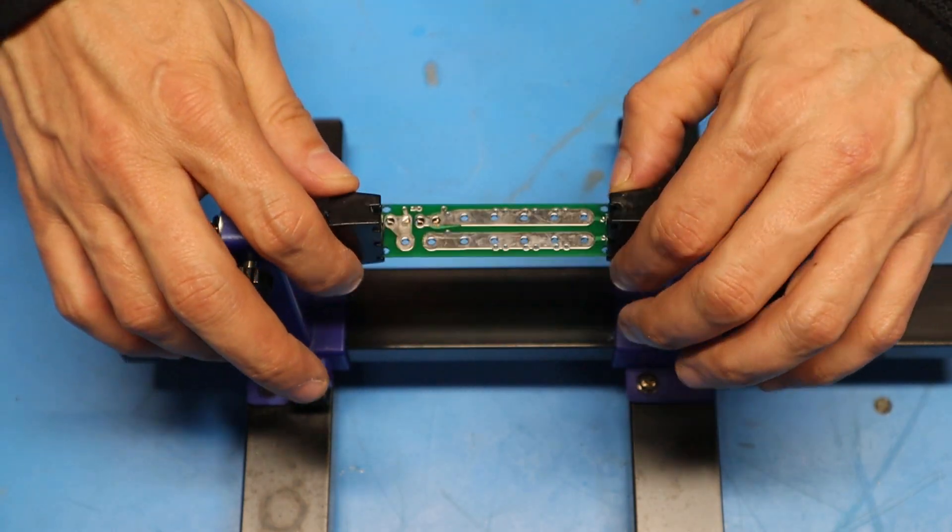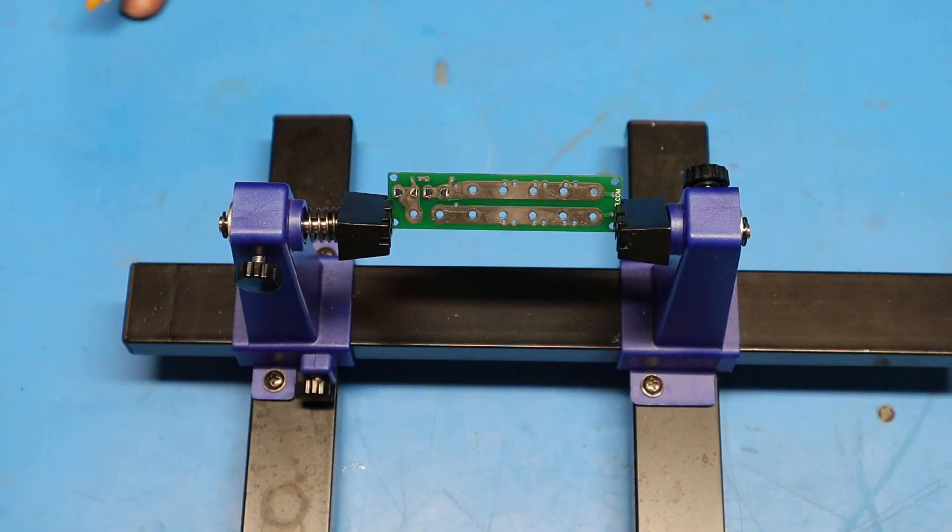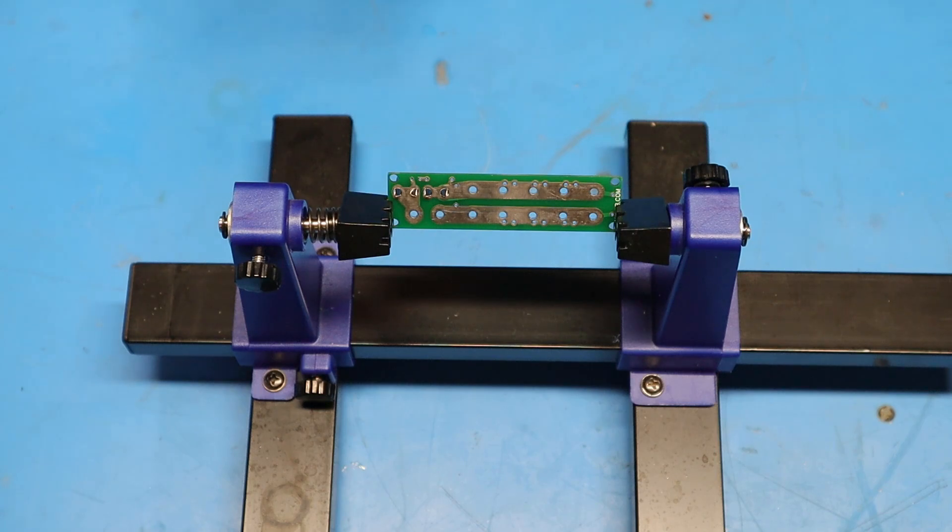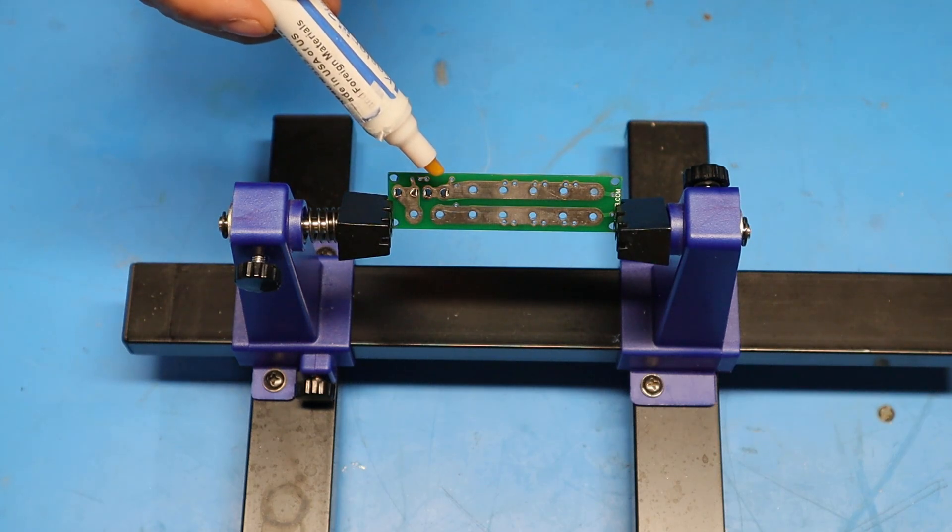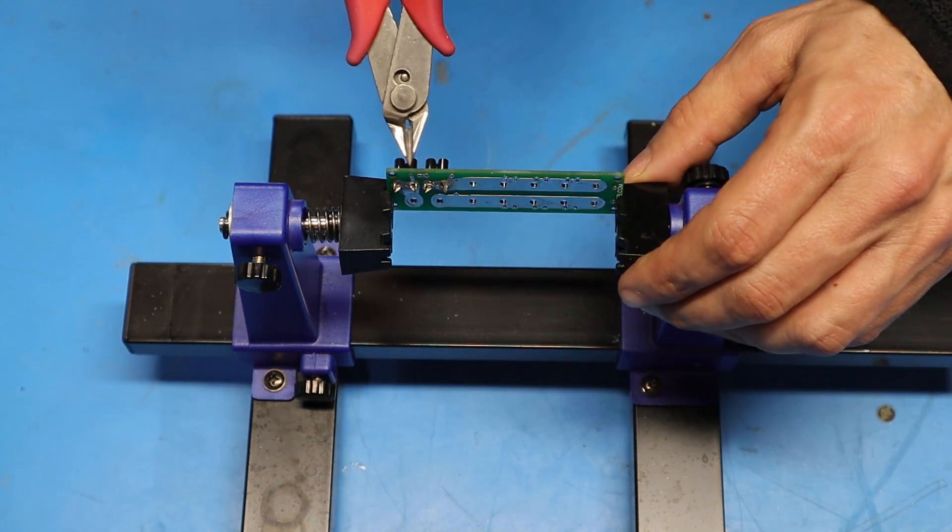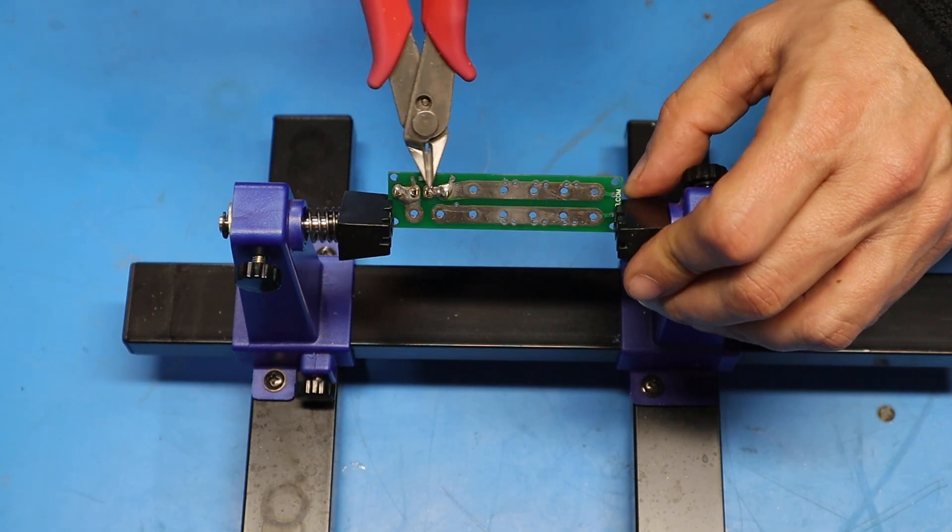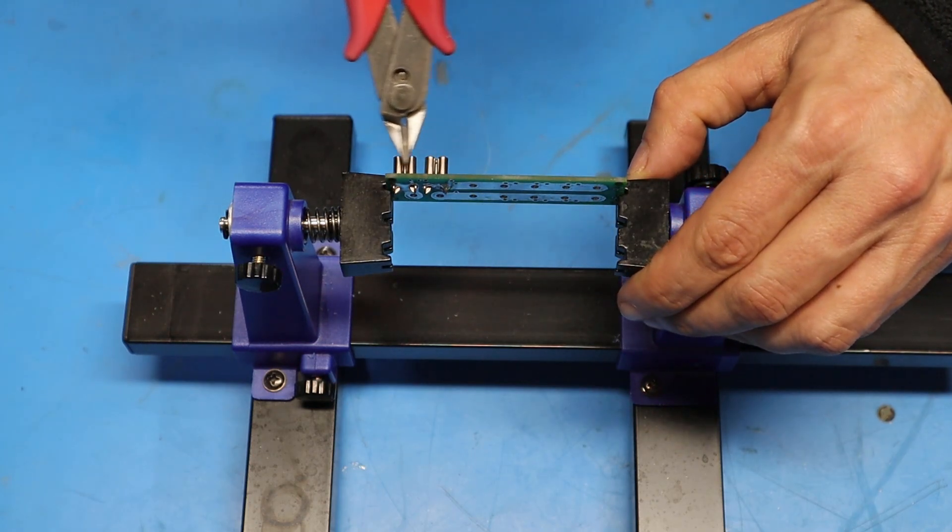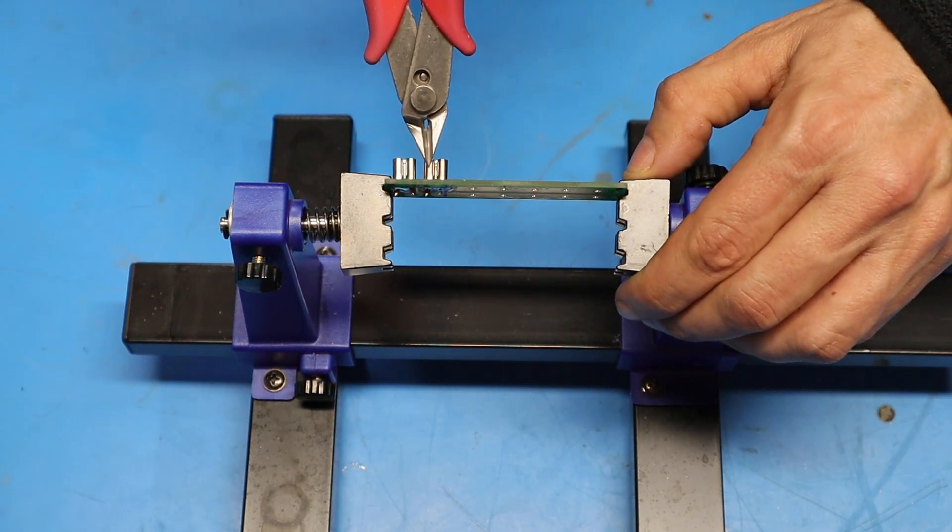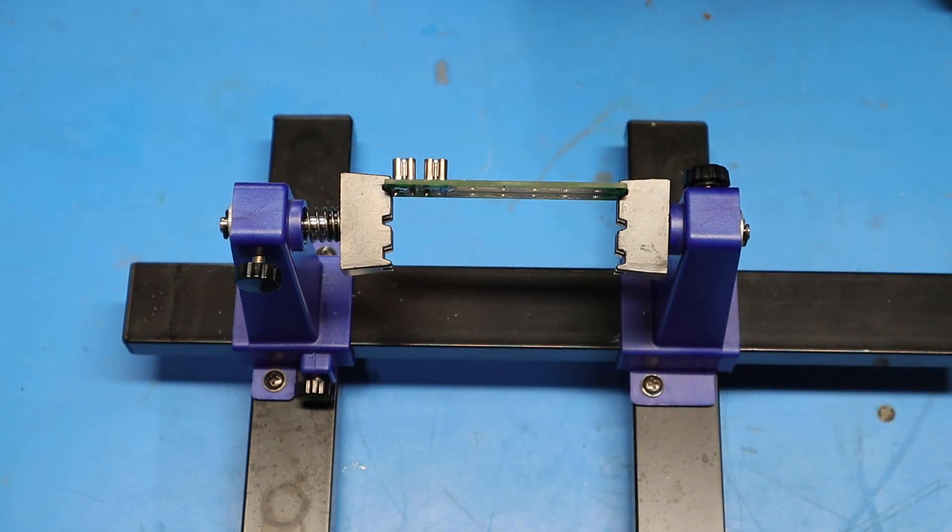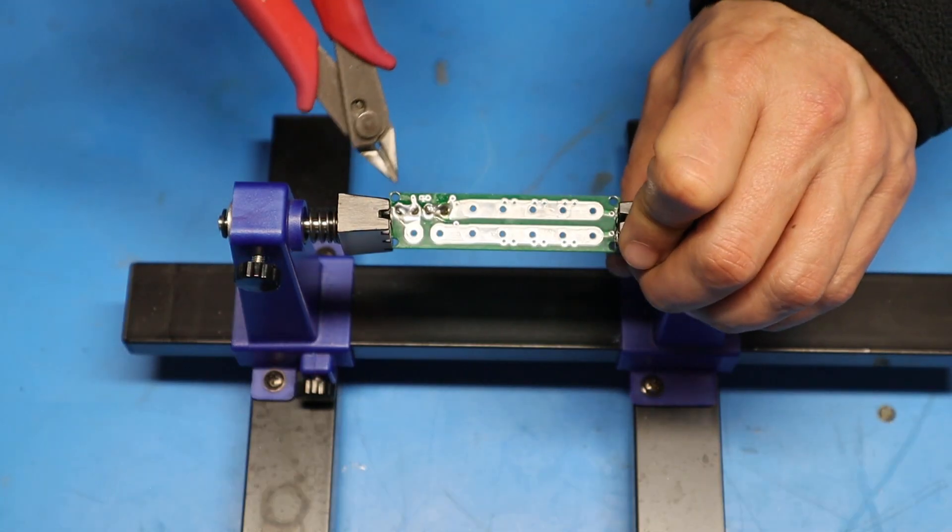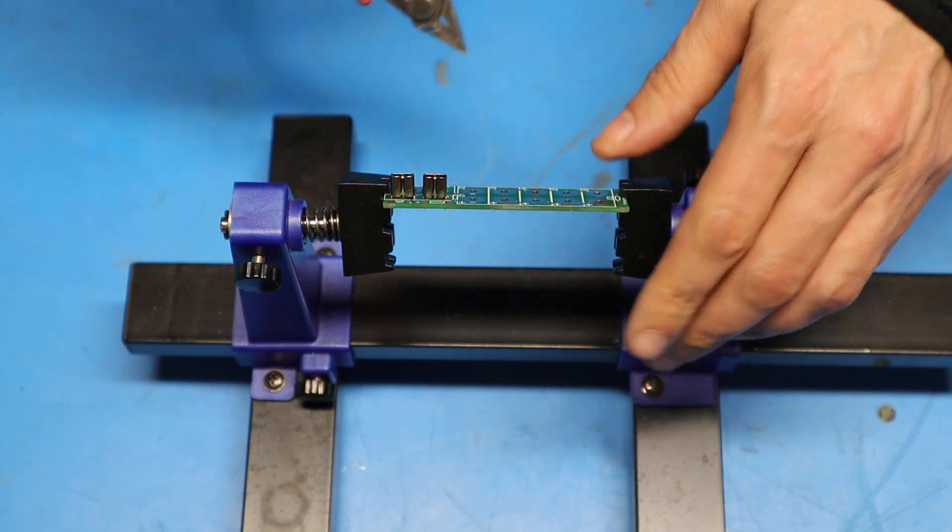Now I'm going to flip this over and solder the leads from the back side. Since these contacts are made of nickel plated brass, I'm going to put a little bit of flux on here to help the solder flow. One thing to note is when soldering these contacts we don't want to let solder flow down into the contact where the fuse plugs in, otherwise the fuse won't seat properly. These look okay, I'm going to move on to the next step.